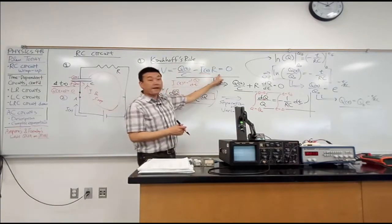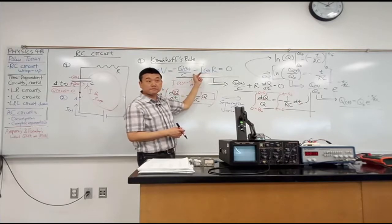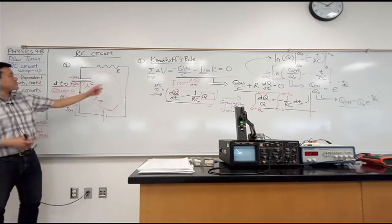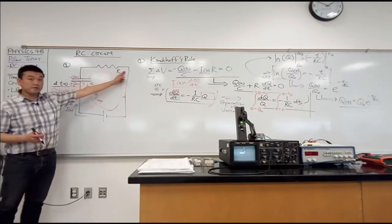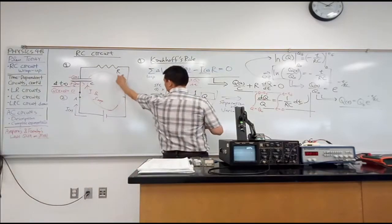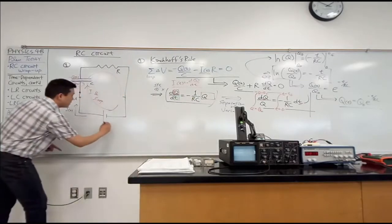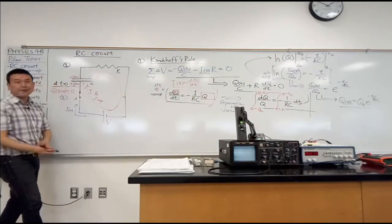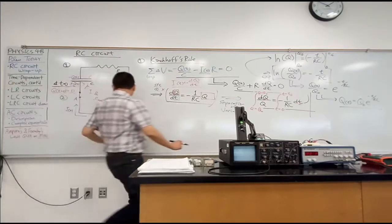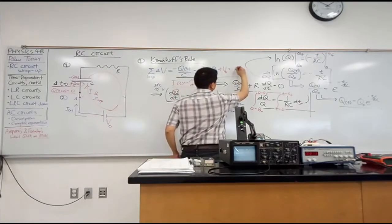This is still minus IR. Why do I not have to change the sign of this term? With the resistor, what matters is the direction of current, and I'm still going with the current, so it's still minus IR. Let me write down the term that I gain as I go through the battery. The voltage of the battery is V₀, a constant value. So I'll get plus V₀ from here, so plus V₀ is equal to zero.